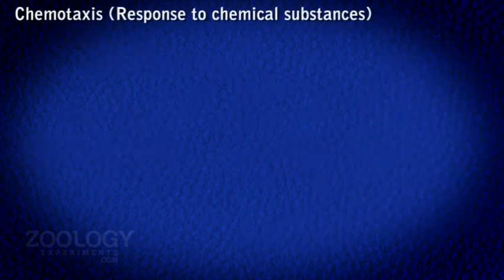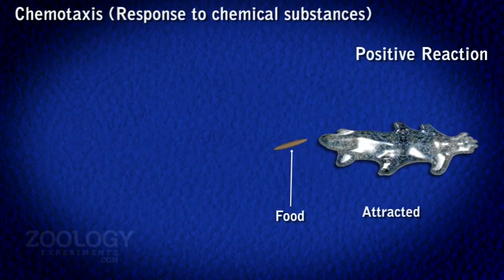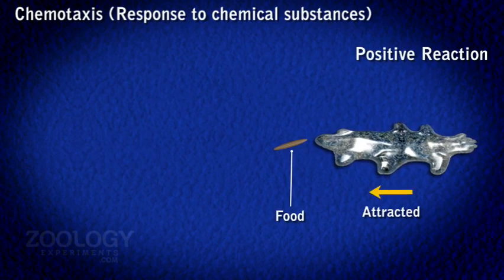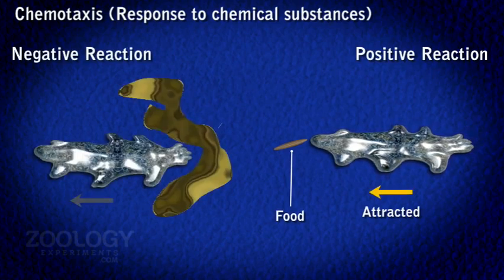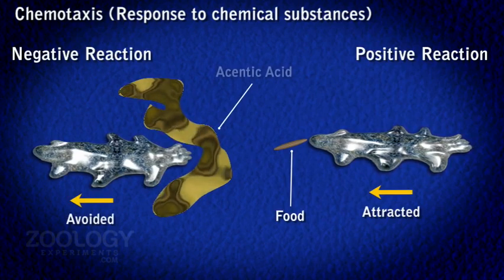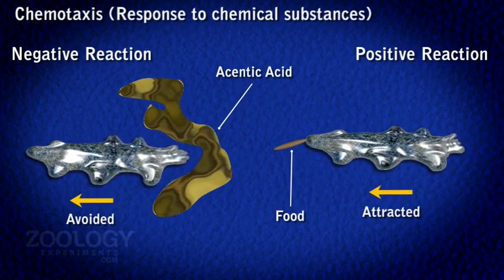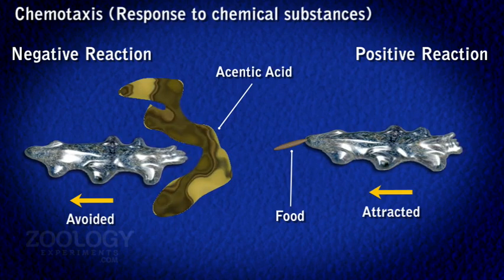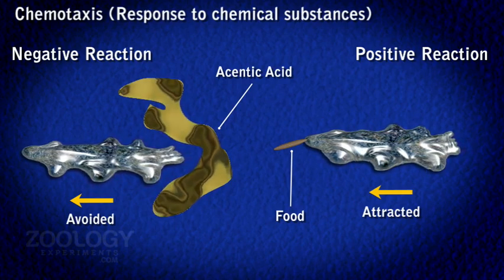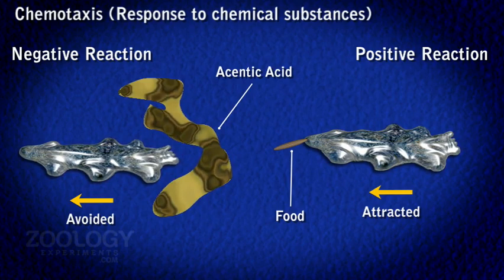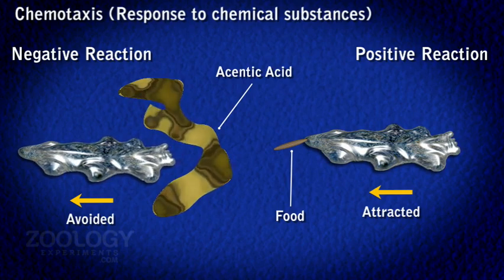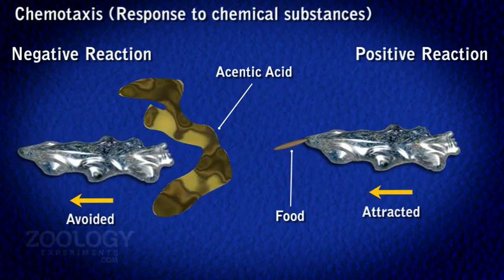Chemotaxis: Amoeba responds positively to food organisms. It is negatively chemotactic to strong solutions of alkalis, salts, and sugars. It also avoids scent particles or other obstacles in the way.